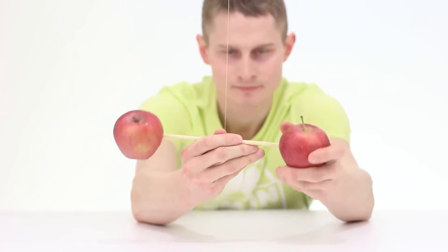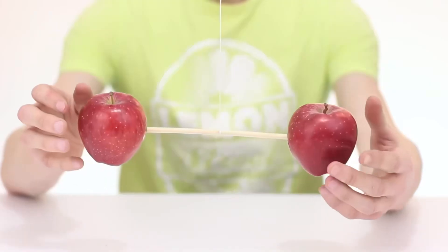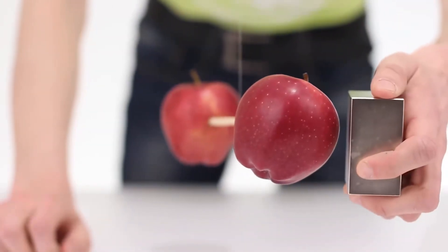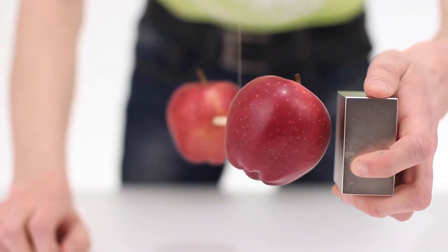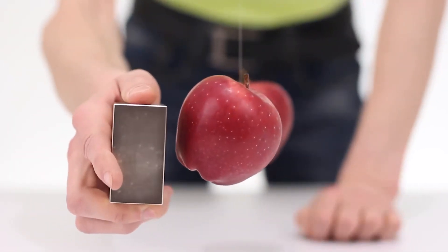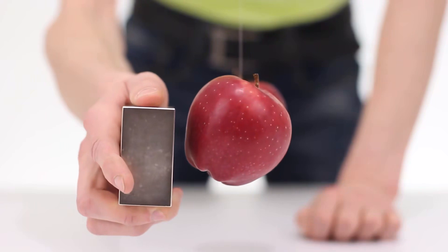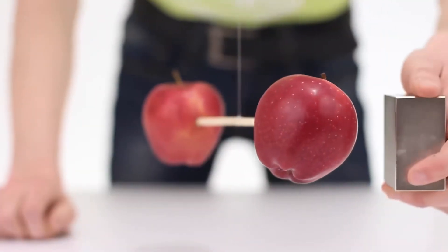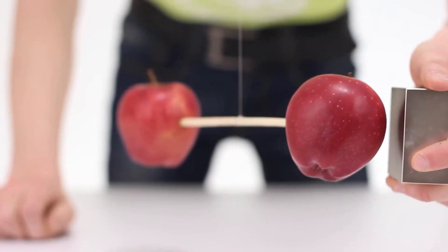But what if you put two apples on a wooden stick and balance them in the air? Now you can see that the magnet still causes small fluctuations in the apple. It seems that there really is a lot of iron in this fruit. This trick is also great with grapes. Who would have thought that fruits and berries can be magnetic?